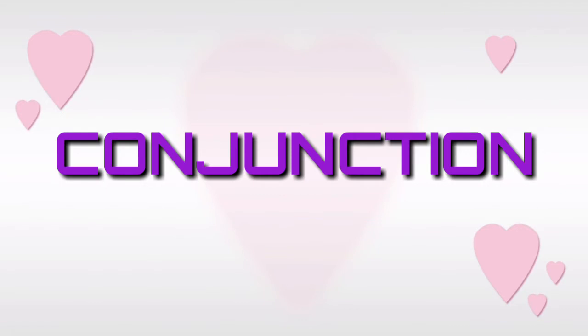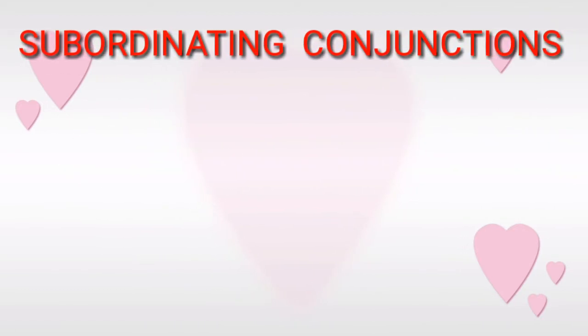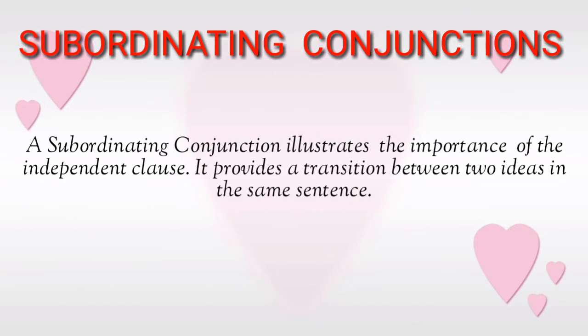In English grammar, a conjunction is a part of speech that connects words, phrases, or clauses — these are called the conjuncts of the conjunctions. The term 'discourse marker' is mostly used for conjunctions joining sentences. We have learnt subordinating conjunctions earlier. There is only one rule to remember: a subordinating conjunction illustrates the importance of the independent clause and provides a transition between two ideas in the same sentence.